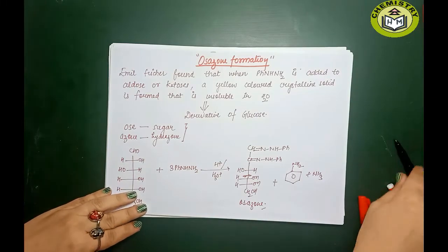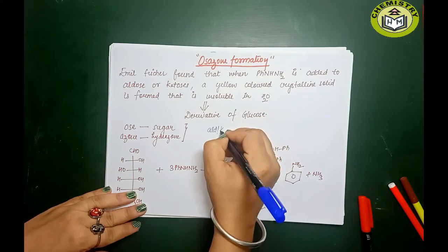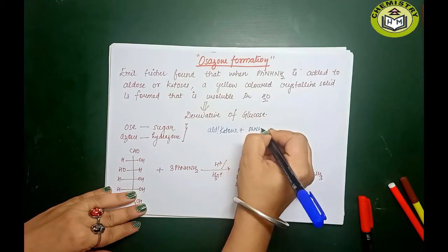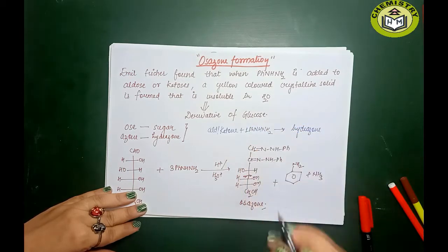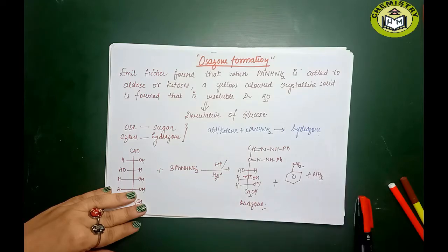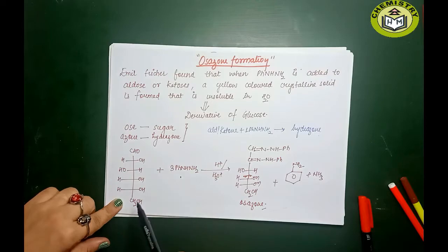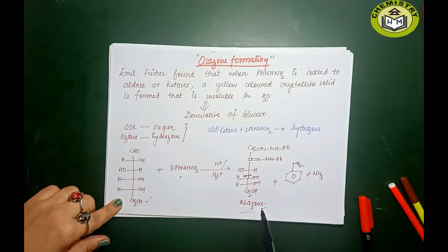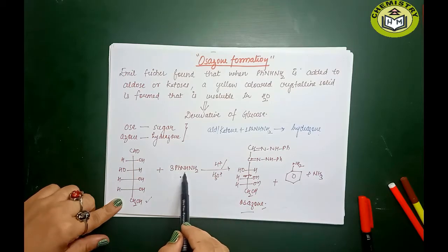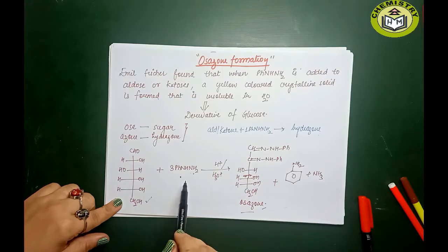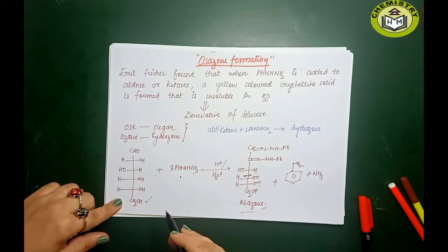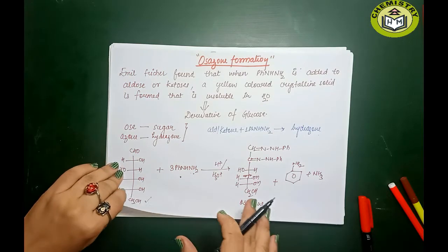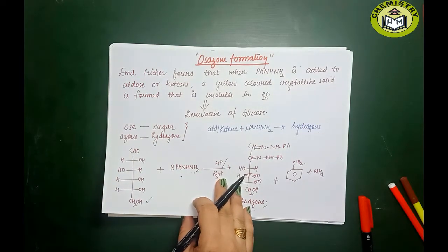One very important thing to keep in mind: whenever an aldehyde or ketone group is there and we take one molecule of phenyl hydrazine, we always get the formation of a hydrazone. If you use one equivalent of phenyl hydrazine, you get hydrazone as the end product. But if you use three molecules of phenyl hydrazine with glucose, it turns into osazone. The first molecule of phenyl hydrazine acts as an oxidizing agent, being reduced to aniline and ammonia, and the other two equivalents are used to form an imine with the carbonyl group.